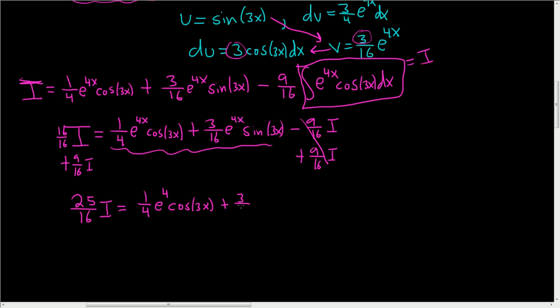Plus, and then we have 3 over 16 e to the 4x sine of 3x. What a mess. To solve for I, which is what we're trying to solve for, it's our original integral, we're going to multiply both sides carefully by the reciprocal. I'm going to do it like this, 16 over 25.